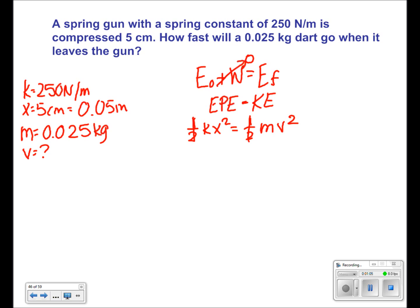Dividing both sides by m, we get that v² is equal to kx² over m. Putting in our numbers, we get that v² is equal to 250 times 0.05² over 0.025.